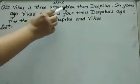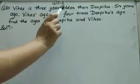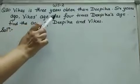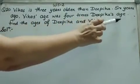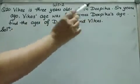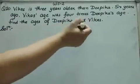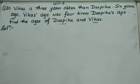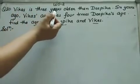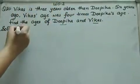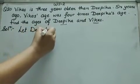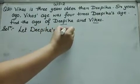Question 20: Vikaas is 3 years older than Deepika. 6 years ago, Vikaas's age was 4 times Deepika's age. Find the ages of Deepika and Vikaas. Let Deepika's age be X years.